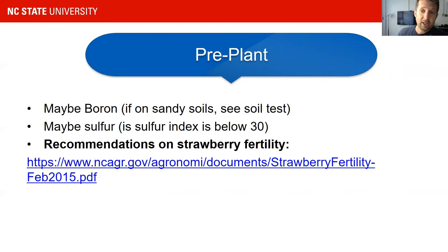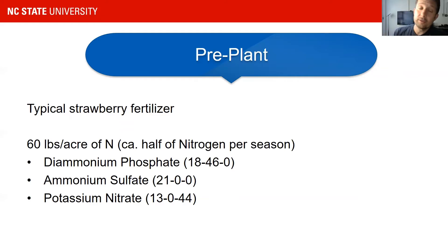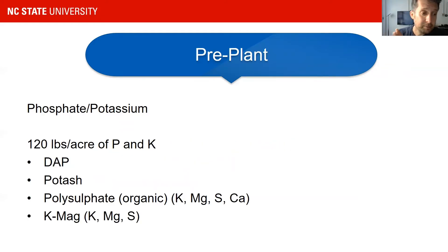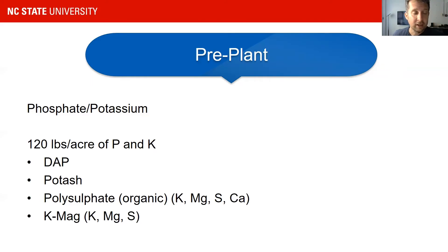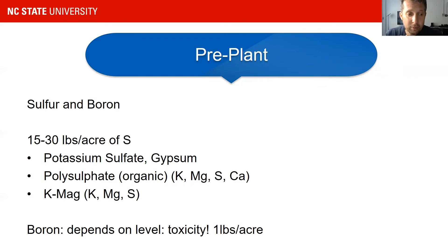The link is available, and typical full-spectrum strawberry fertilizers are used a lot in strawberry production here in North Carolina. Ammonium sulfate, potassium nitrate, and diammonium phosphate are also used, as well as potash. For sulfur content, polysulfate or K-Mag are pre-plant fertilizers that can be mixed in to increase sulfur. With boron, be careful because you can get boron toxicity — check your soil test to see what your boron levels are.